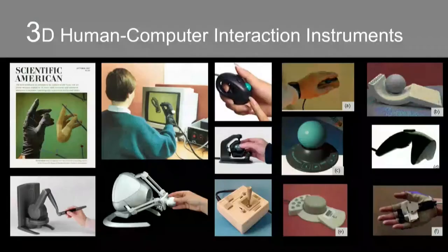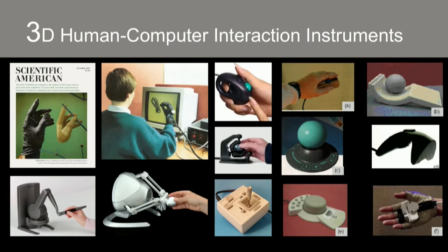3D human computer interaction is almost as old as computing itself. But up until recently, most of these devices have remained in the domain of research labs or specialized medical and engineering applications, failing to break into mainstream computing. Today, because of the rise of spatial computing as a true 3D output, the resulting market demand for a suitably complementary input, and advances in a bunch of fields, like cameras, lasers, computer vision, machine learning, and so on, we're seeing systems that are capable of tracking a 3D point in space at very high accuracy, with very low latency, at consumer prices.